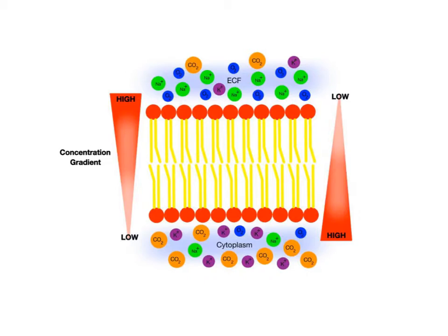Oxygen gas molecules are also found in higher concentrations outside the cell. On the other hand, potassium ions and carbon dioxide molecules are usually found in higher concentrations inside the cell cytoplasm. It's important to emphasize that each chemical substance has its own concentration gradient.